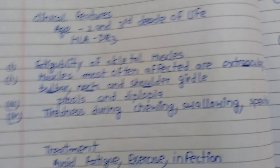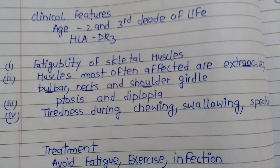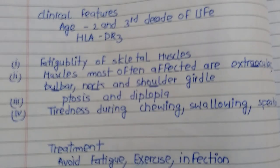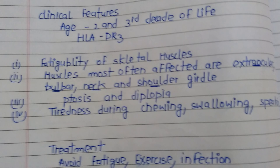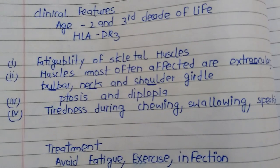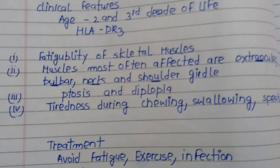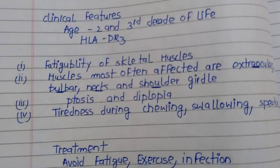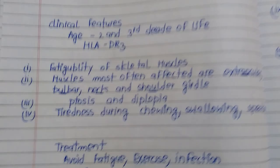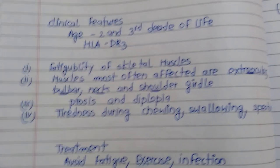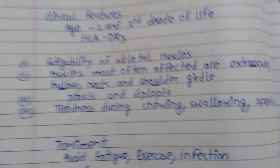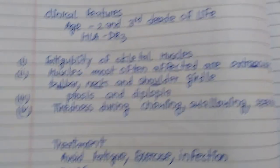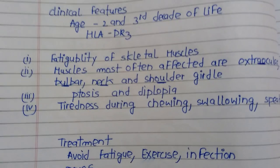Other signs include trident tongue — the tongue appears small and trident-shaped — and hanging jaw. This occurs because the masseter muscle is weak, causing the jaw to remain open or hang.